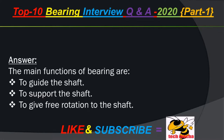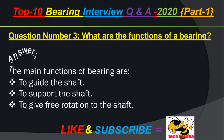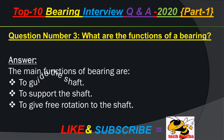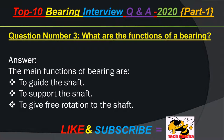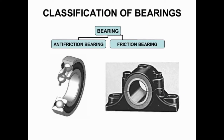Question number 3: What are the functions of a bearing? Answer: The main functions of a bearing are to guide the shaft, to support the shaft, and to give free rotation to the shaft.